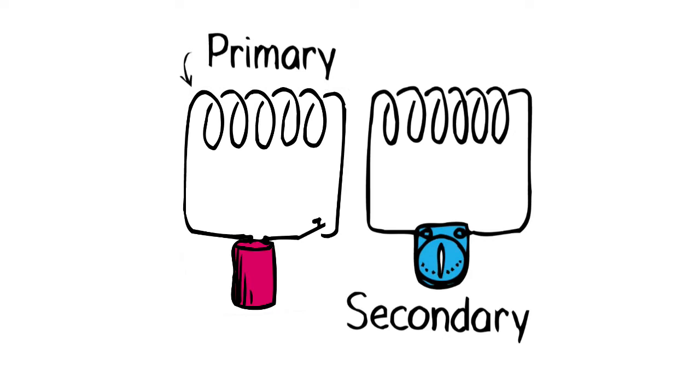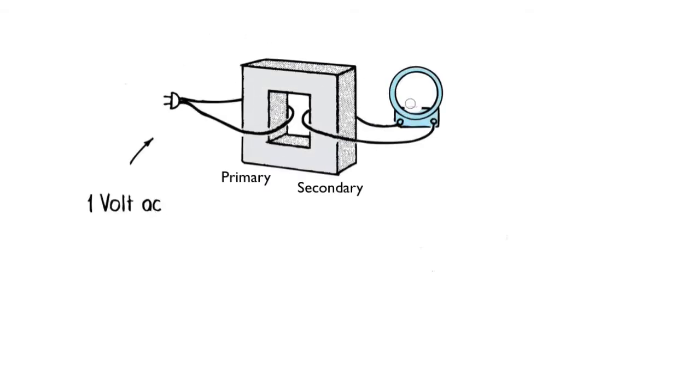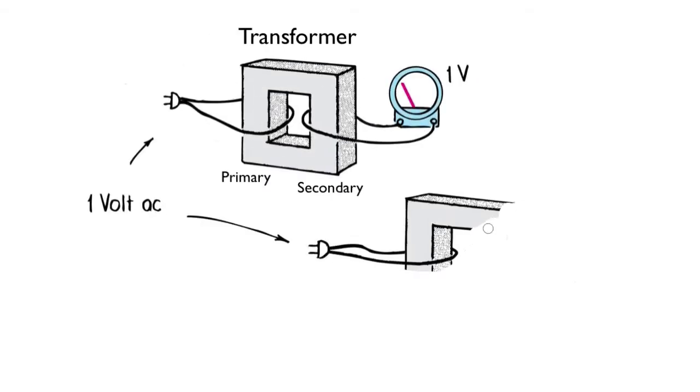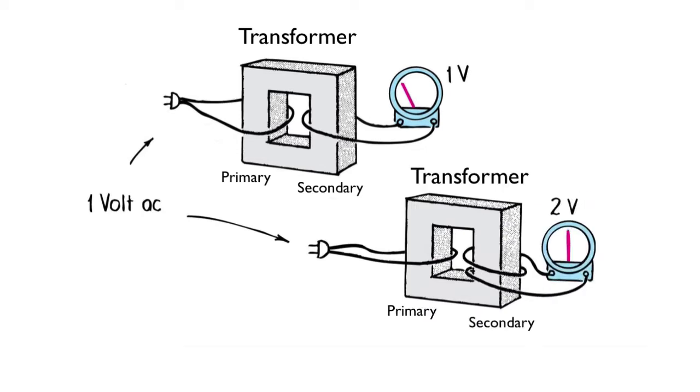This, of course, is the principle behind a transformer. When the number of loops in the secondary is more or less, then the voltage can be stepped up or down.